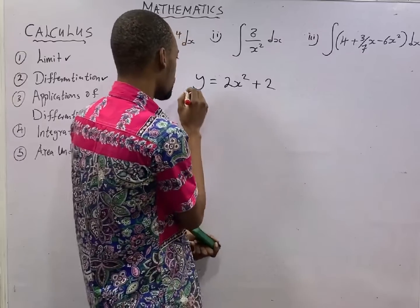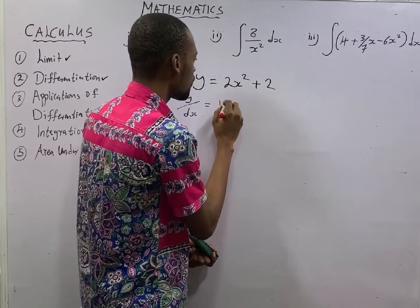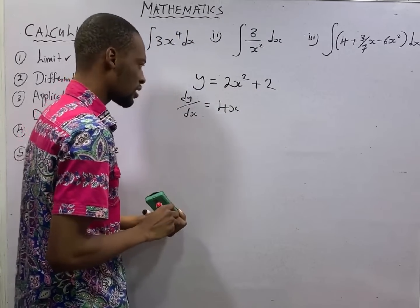This is now the result. dy over dx is equal to 4x. Once you differentiate this, you get 4x.